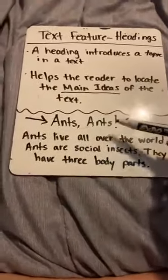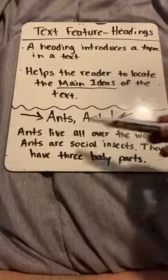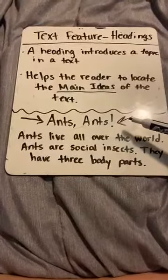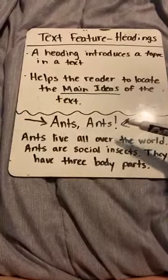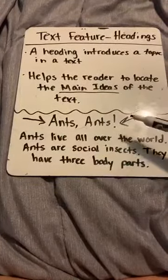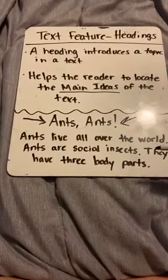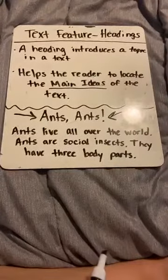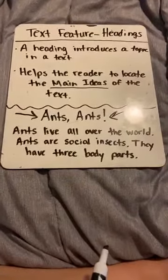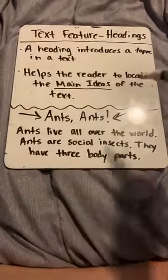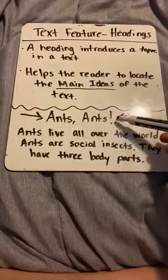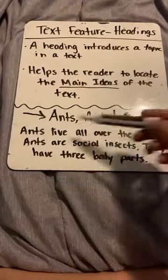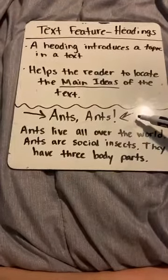Because one, it's above the paragraph right here. And it's introducing the topic. So if I see this heading, ANTS, I know that all of the next paragraph is going to be about ants. In this case, it is. It tells us that ants live all over the world, they are social insects, and they have three body parts. And does it tell us the main idea? The main idea tells us what the story is mostly about. Is this passage mostly about ants? You're right, it is.